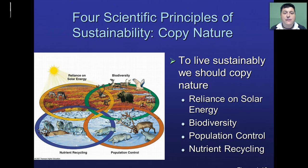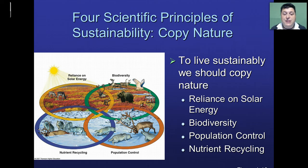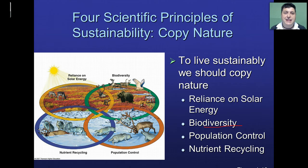Another principle is that nature relies on biodiversity. There are organisms that provide services and produce things in the environment; each organism has a role, and there's a diversity of living things. So if one happens to naturally go extinct, there's hopefully another to do its job. We need to maintain that biodiversity to ensure there are plenty of living things providing natural resources for us to survive and maintain our economies.